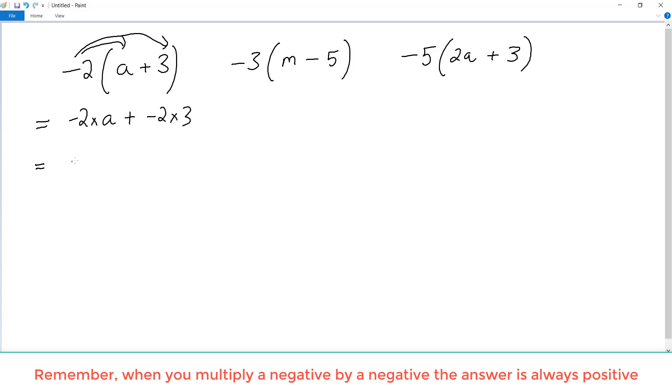Now we can simplify. So we end up with negative 2a, so we're just not writing the times, plus the negative 2 times 3, which is negative 6. Now most of us write this without the plus, so minus 2a minus 6 would be our answer.